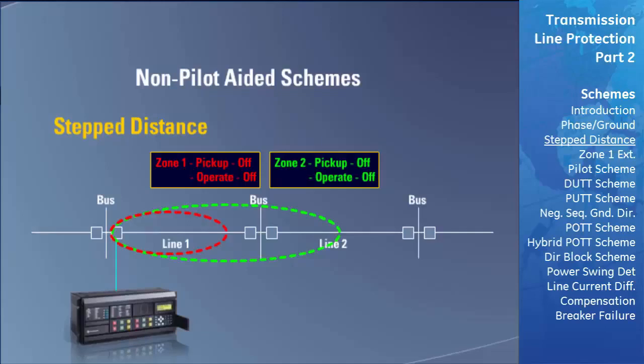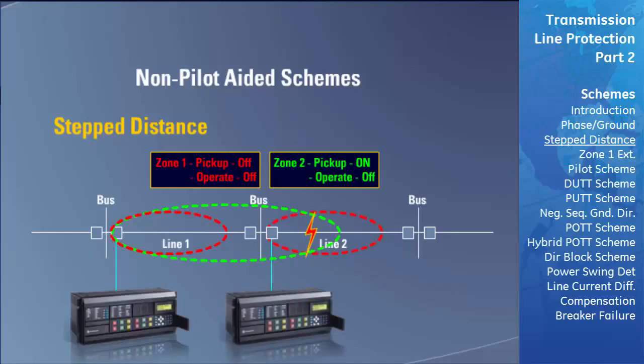You may wonder what happens if a fault occurs on the adjacent transmission line but still within the zone 2 area of protection. Normally, after the zone 2 time delay expired, the relay would trip the unfaulted transmission line. However, every adjacent transmission line is protected by its own distance relay. This fault would fall into the second relay's zone 1 of protection, and the fault would be cleared before the timer of zone 2 in the first relay expired.